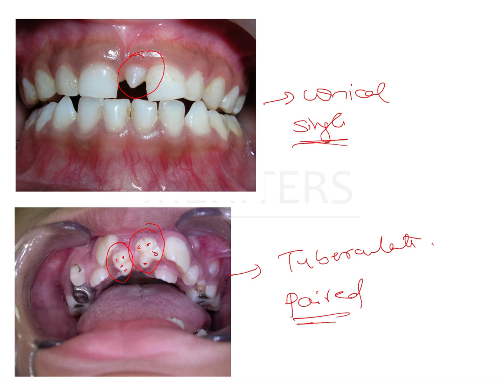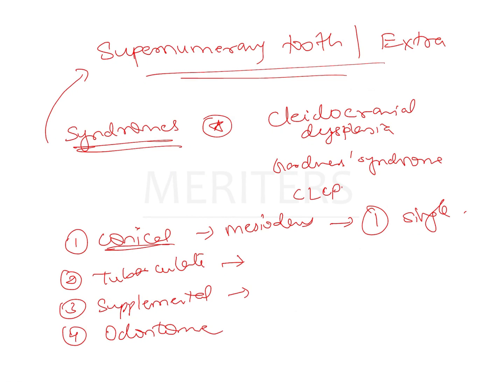To summarize: if given an image of a supernumerary tooth along the midline that is conical and single, it is most likely a mesiodent. If it is paired with multiple cusp-like formations, it is tuberculate. The supplemental type resembles a normal tooth — it can resemble a lateral incisor, premolars, or even a molar. The supplemental molar is often seen distal to the third molar and looks exactly like a normal tooth in the dentition, unlike conical and tuberculate types.